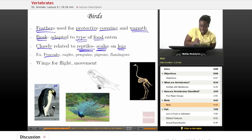Some examples of birds would be peacocks, eagles, penguins, pigeons, flamingos. One thing is that all birds have wings for flight or for movement.